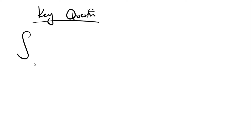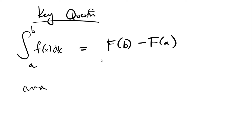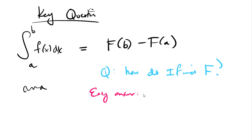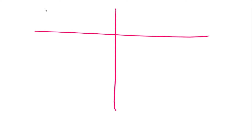The key question is: I start with an area, and I want to use the Fundamental Theorem of Calculus Part 2 to turn it into a very simple subtraction problem. So the question is how do I find capital F — how do I find an antiderivative? The easy answer is that I flip the differentiation table, because if integration is the opposite of differentiation and I have a table of derivatives, I also have a table of antiderivatives.